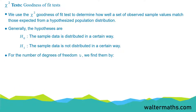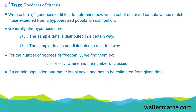For the number of degrees of freedom, nu, we find them by nu = n - 1, where n is the number of classes. However, if a certain population parameter is unknown and has to be estimated from given data, then the degrees of freedom, nu, will be n - 2, where again n is the number of classes.